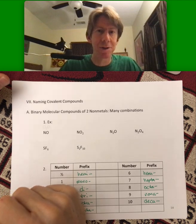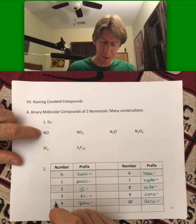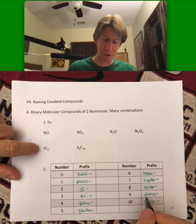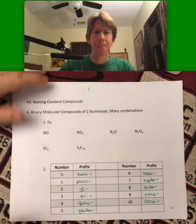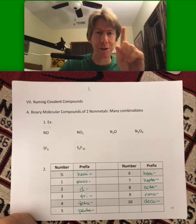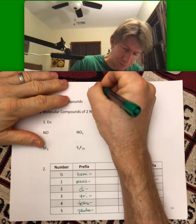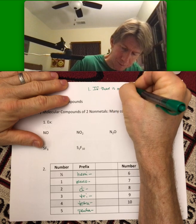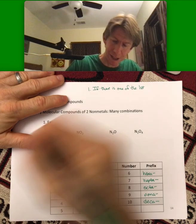And the numbers keep going from there, but these are the only ones you're going to see. Now, when you name binary molecular compounds using these, there are a couple other rules, and I'll put those rules up here. So one, if there's one of the first compound, or for the first element, don't use mono. If there's one of the first element, don't use mono.